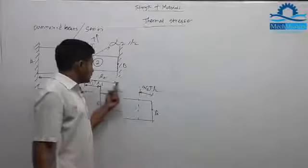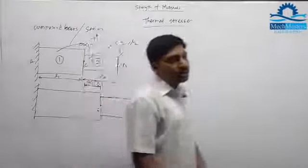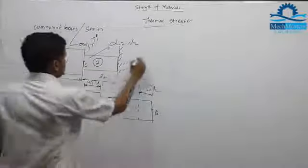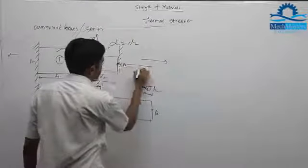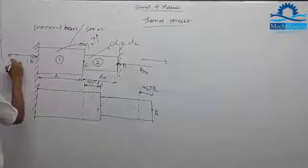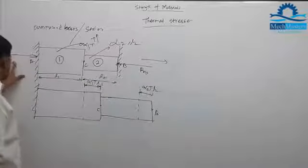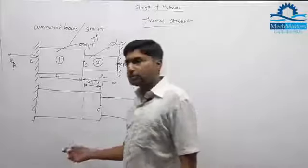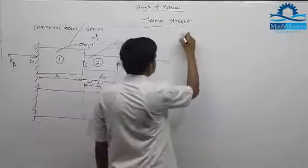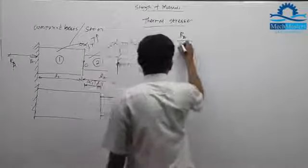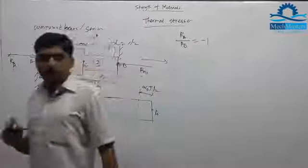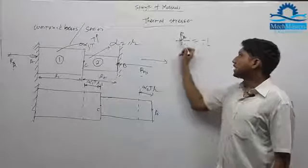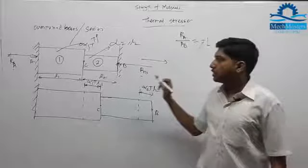Since there is a support at point B, a reaction RB is developed. The action is on one side, so the reaction develops on the opposite side, giving us RB and RA. Remember: RA and RB are magnitude-wise the same but direction-wise opposite. So RA/RB equals minus 1 — same magnitude, opposite direction. We can write RA = R and RB = R.